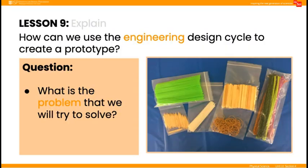In the explain, start using the engineering design cycle by asking students to identify the problem they are trying to solve. Show them the materials they will be able to use to build a new tool. Then explain that after building their tool, they will have three minutes to use the tool to dig up objects from a sand tray. Engage them in a conversation about how to make this a fair test of their tools by deciding on the rules or constraints that everyone will use.